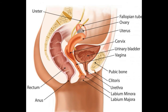Terms such as recto-uterine pouch and cul-de-sac are sometimes used to refer to the Pouch of Douglas. The structure is long and narrow, open at the top and closed at the bottom.